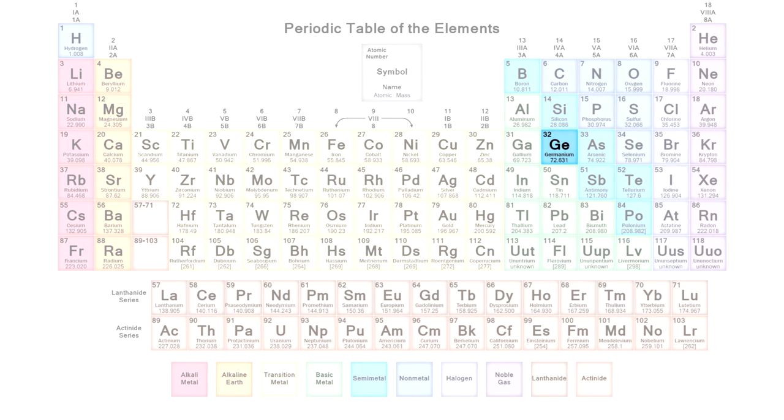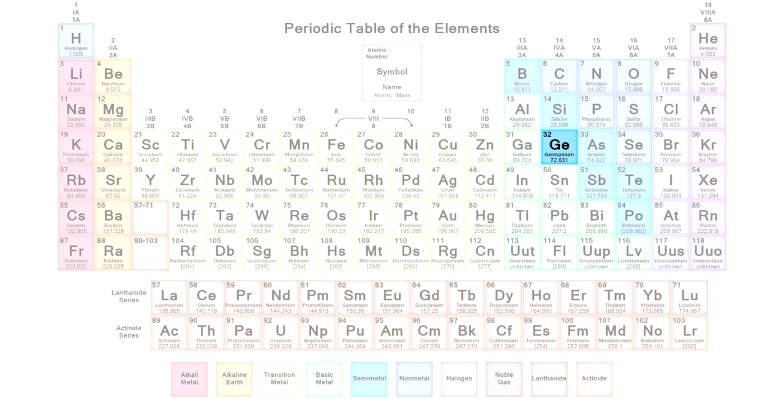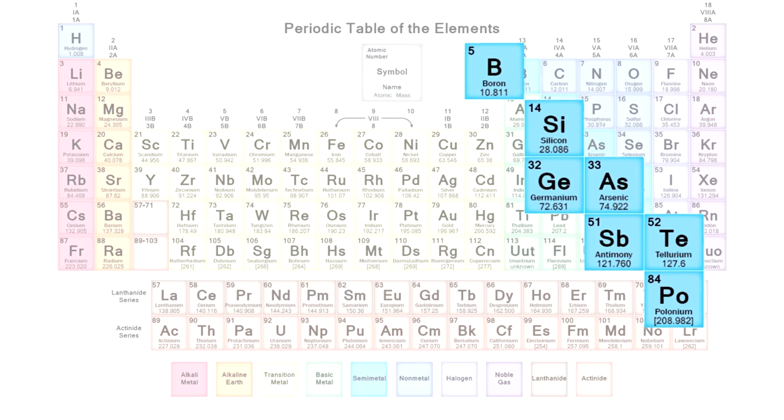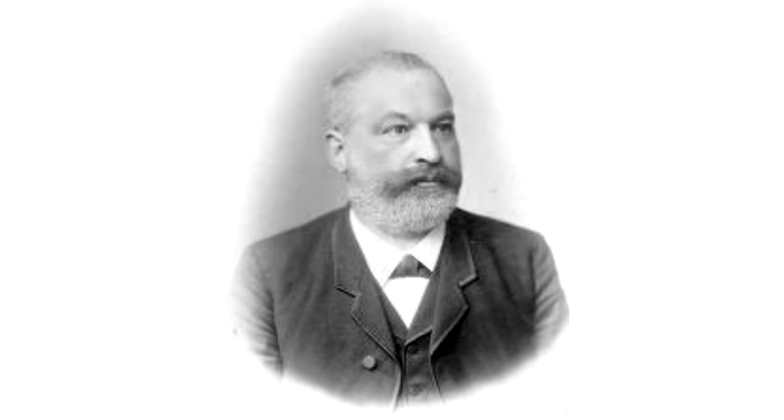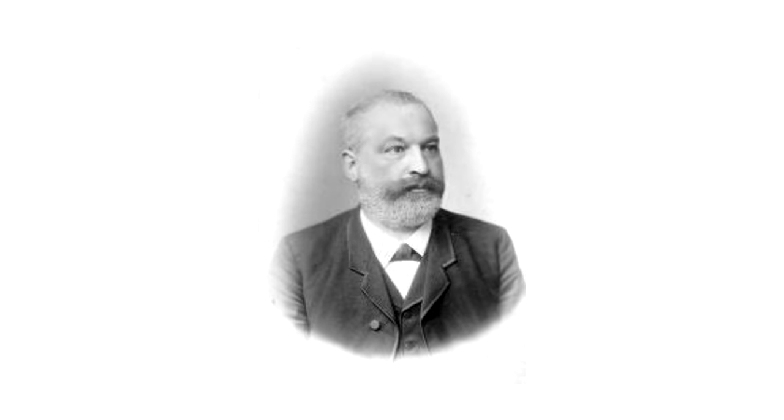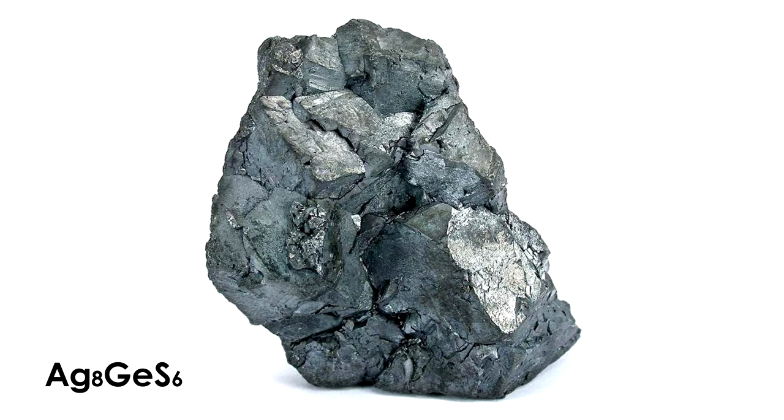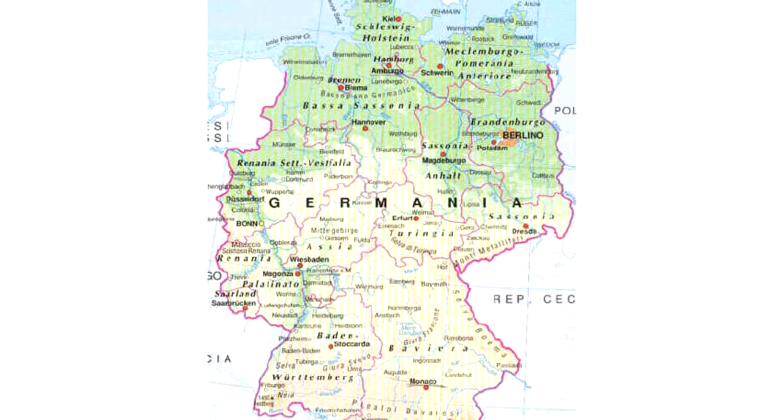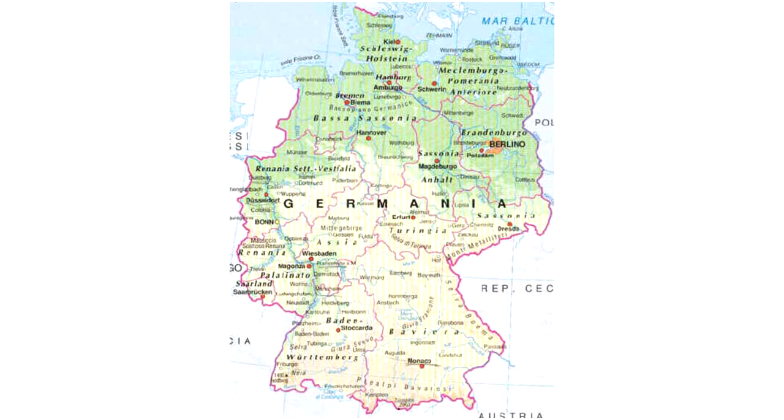In the periodic table of chemical elements, germanium is located above tin in a so-called diagonal region of metalloids, that is, elements which have both properties of metals and non-metals. This element was discovered by German chemist Clemens Winkler, who discovered germanium when studying the mineral agrirodite, and he called it after his homeland, Germany.